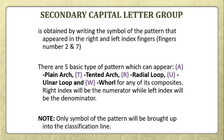The secondary capital letter group is obtained by writing the symbol of the pattern that appeared in the right and left index fingers — fingers number 2 and 7. There are five basic types of patterns which can appear, represented by capital letters. The plain arc is represented by capital letter A, the tented arc by capital letter T, the radial loop by capital letter R, the ulnar loop by capital letter U, and the whorl is represented by W, or any of its composites.